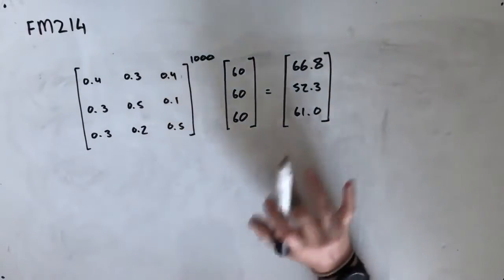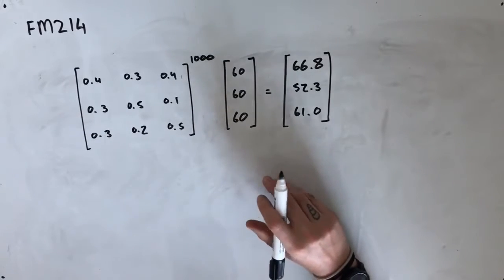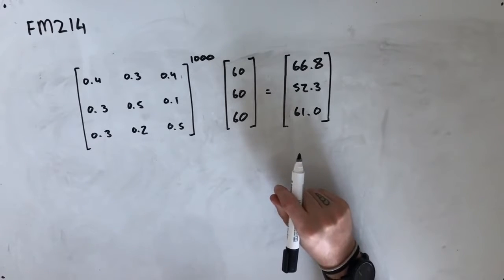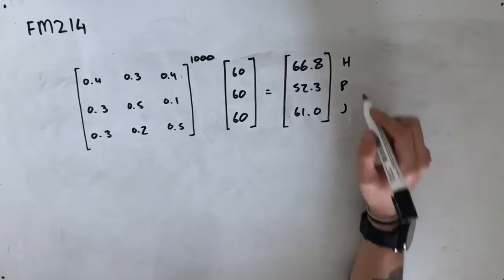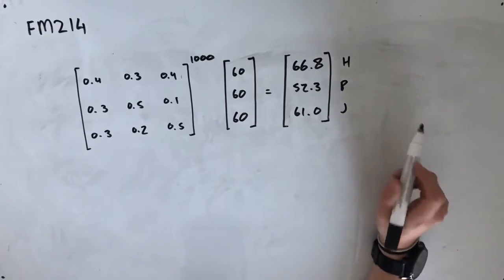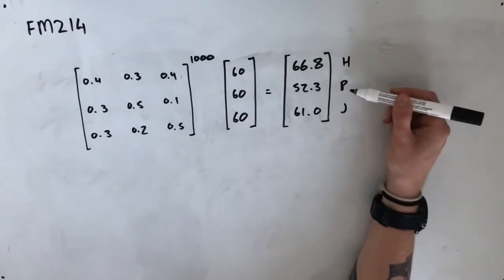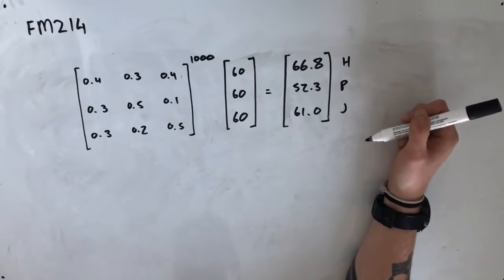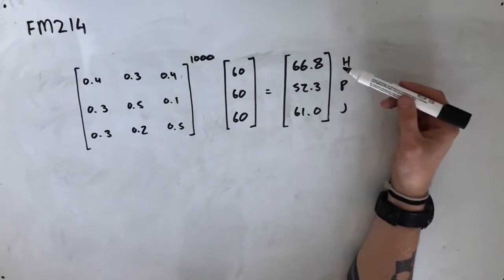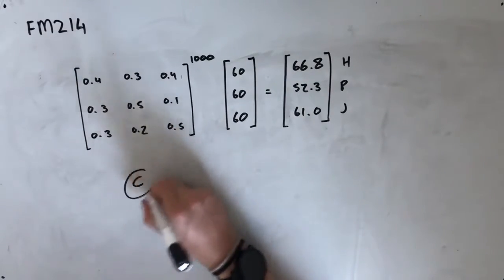Now we're much better prepared to answer this question by comparing the options to those values. Option A says jam will be the most popular sandwich — but if we label these as ham, peanut butter, and jam, we can see jam is not the most popular; ham is. Option B says no employee will choose peanut butter sandwiches — we can see very clearly there are definitely still people choosing peanut butter. Option C says more employees will choose ham sandwiches than jam sandwiches — 66.8 are choosing ham, 61.0 are choosing jam, so option C is looking pretty good.